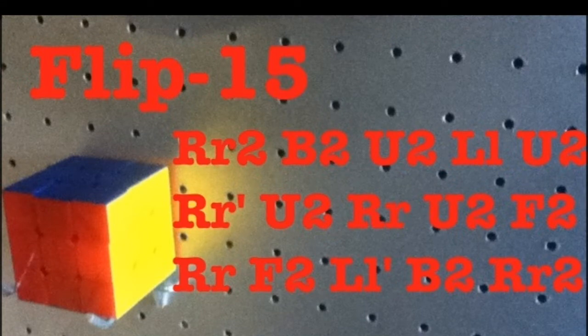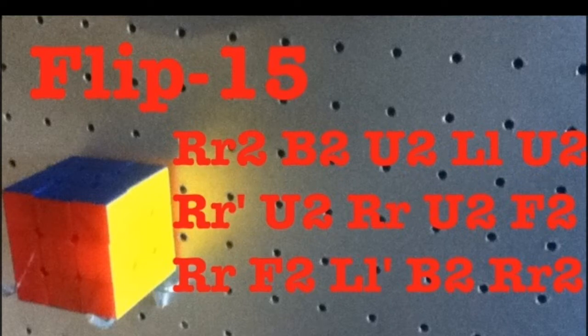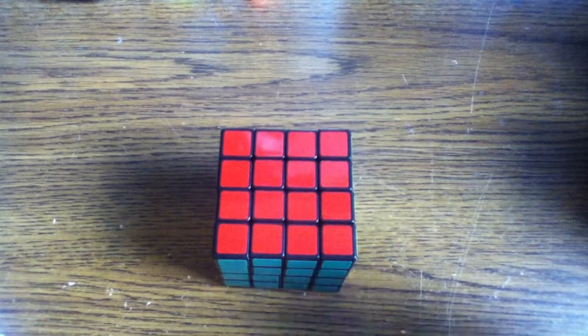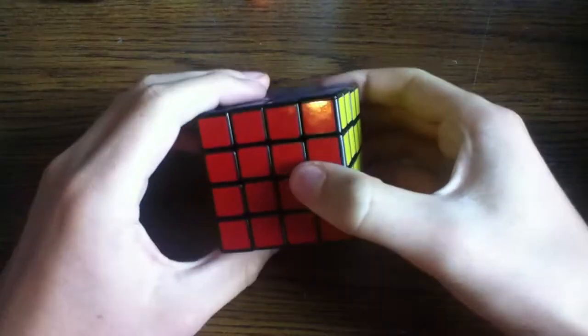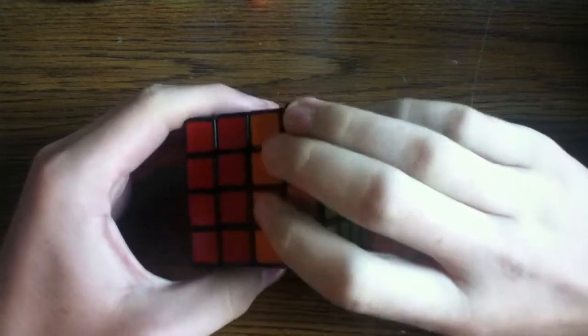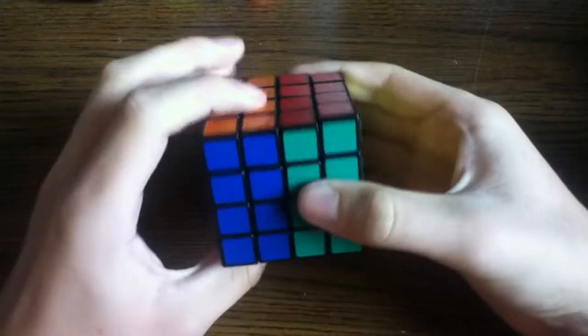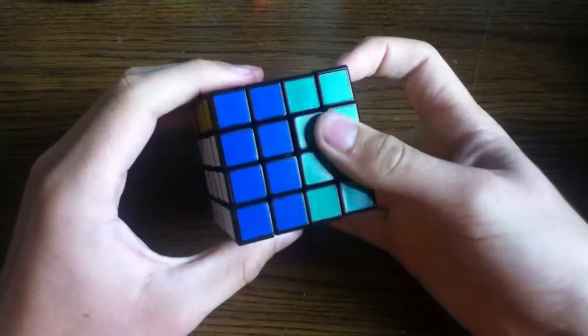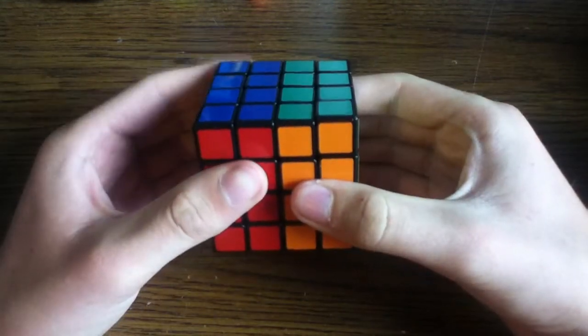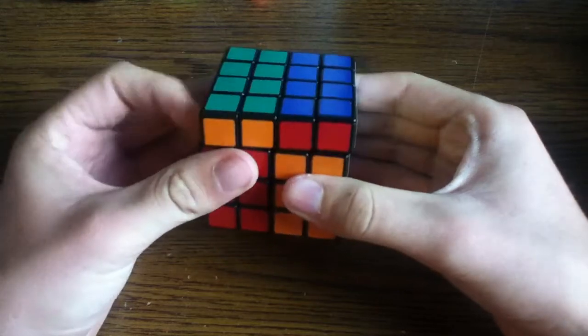The first algorithm to learn is an algorithm that I like to call the Flip 15, because it consists of 15 turns and it flips pieces around. To perform the Flip 15 algorithm, take the right two sides of the cube and rotate it 180 degrees. Take the back side of the cube and rotate that 180 degrees. Take the top side of the cube and rotate it 180 degrees.